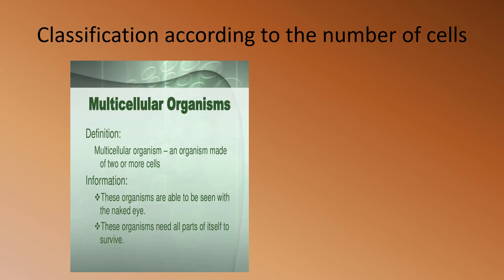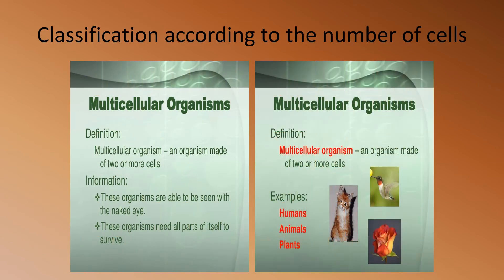Multicellular organisms are made of two or more cells. These organisms are able to be seen with the naked eye. These organisms need all parts of themselves to survive. Examples include humans and animals.